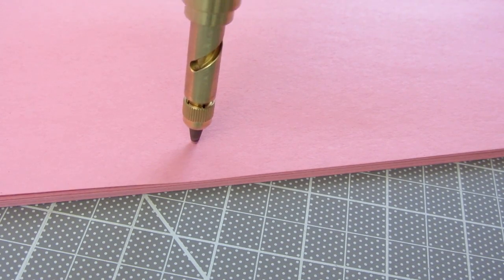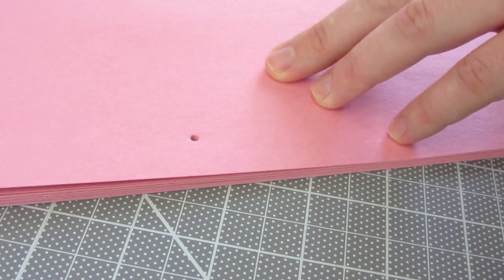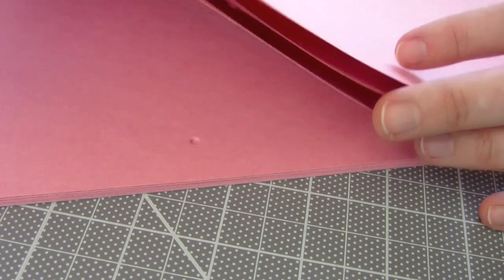For paper, it can go completely through about 5-7 pages with one push. I'd recommend punching your pages in sets instead of trying to punch one big block of pages all at once.